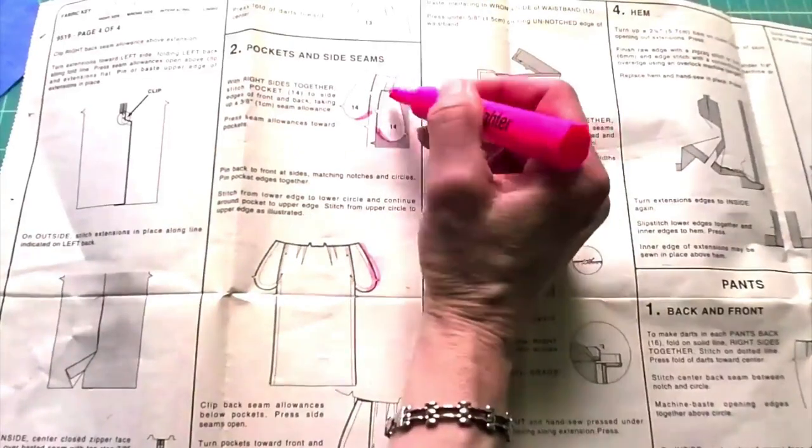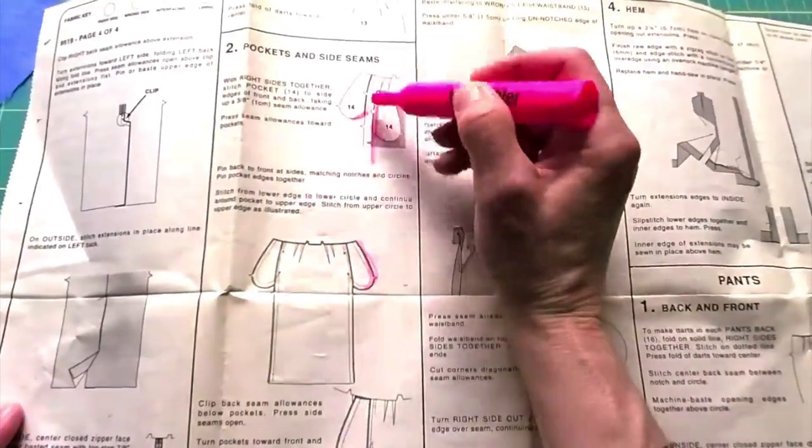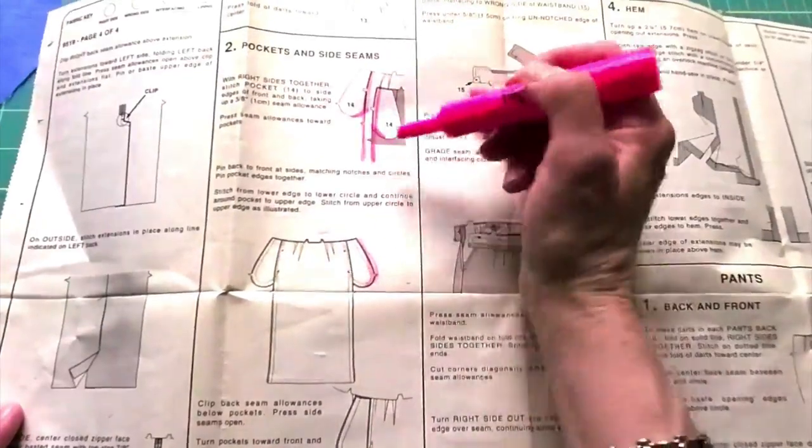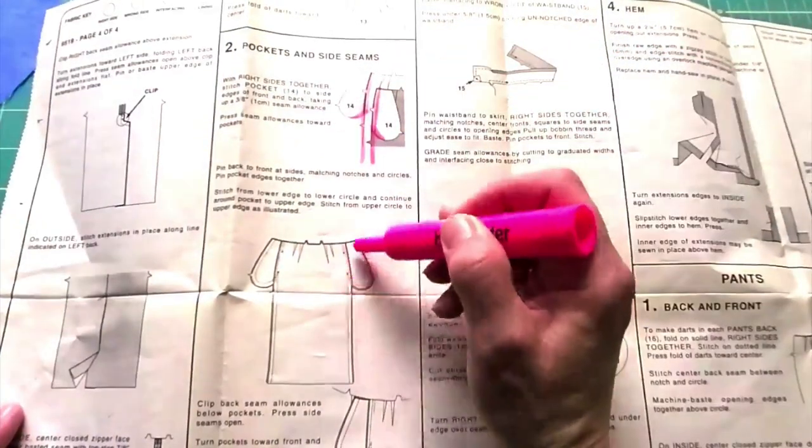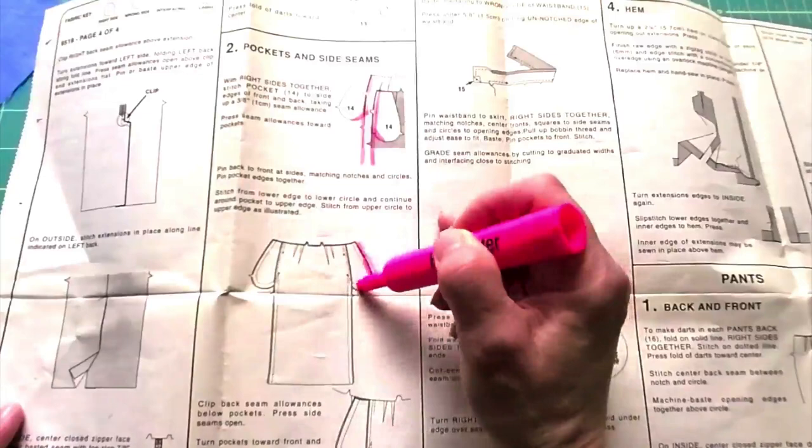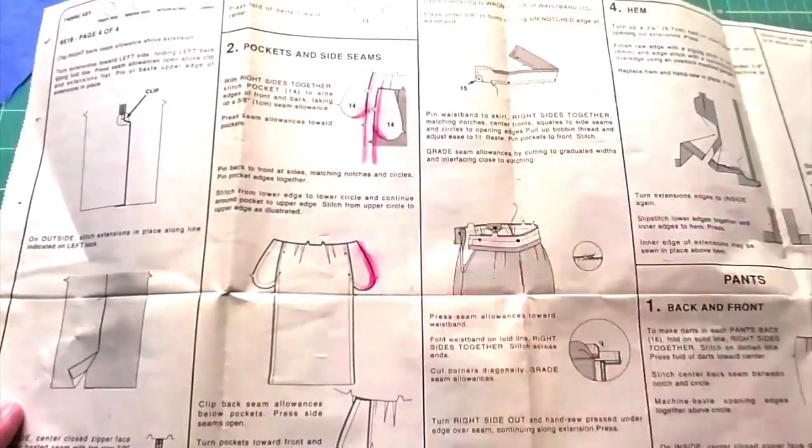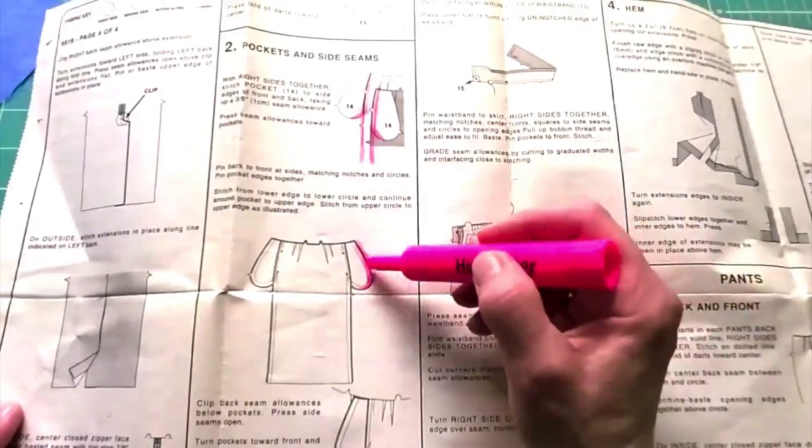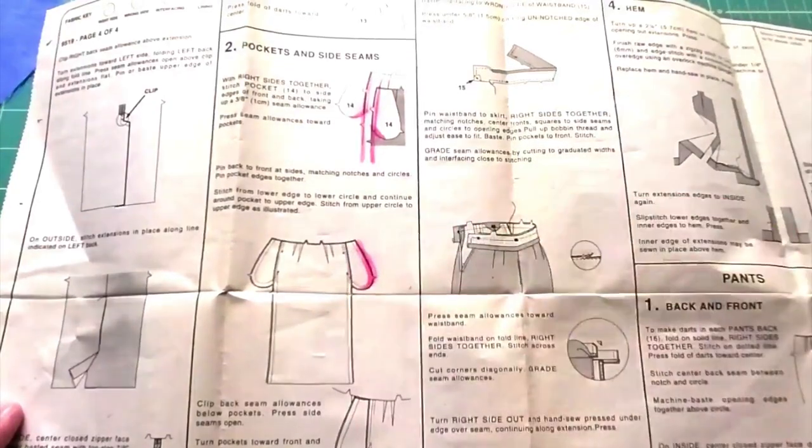Then after we sew it on, we're going to serge the whole side seam of both front and back separately. Then after we sew this whole edge, that's when we're going to serge the rest of the pocket so that we just have one layer of serging there and we're not adding extra bulk.